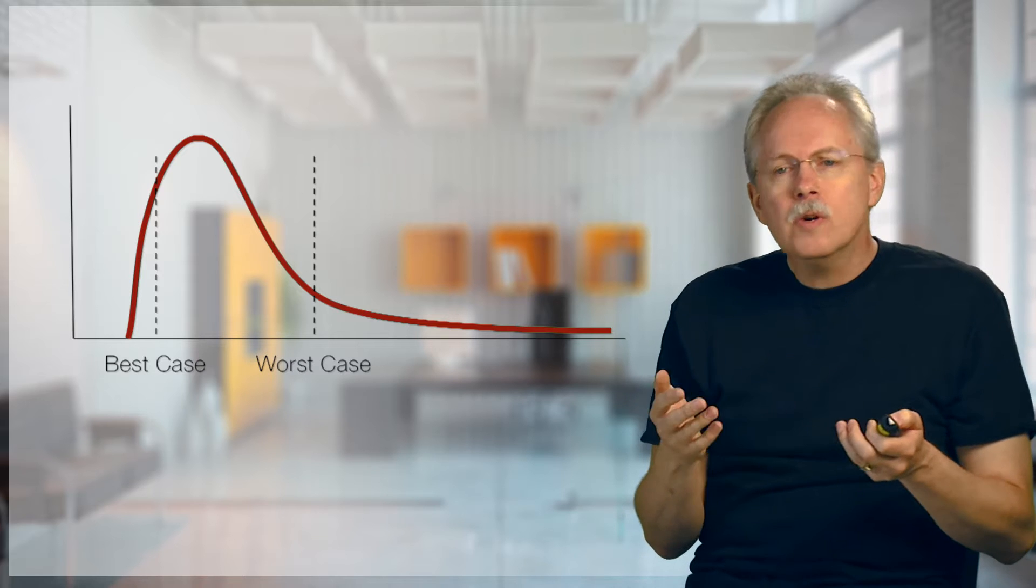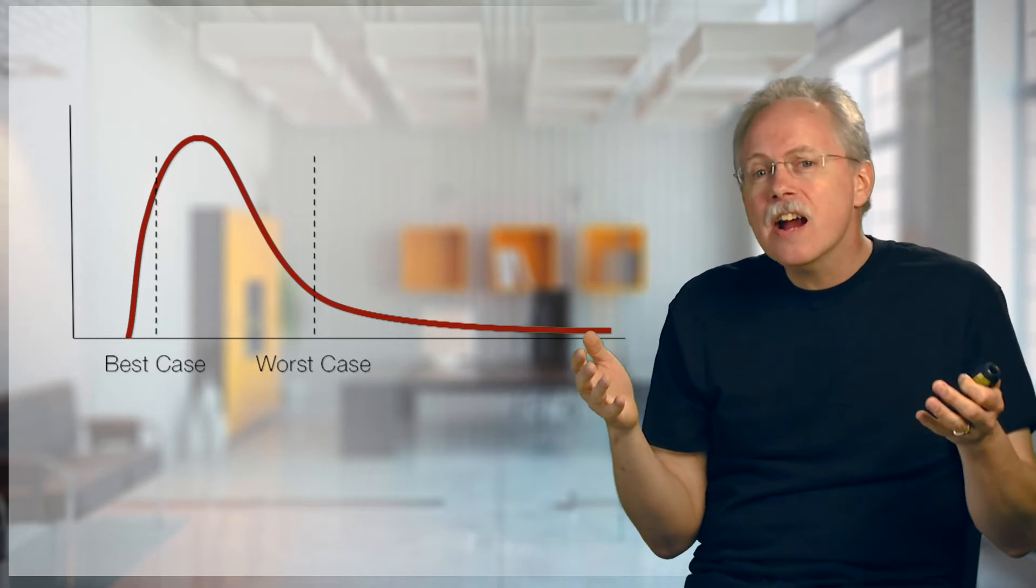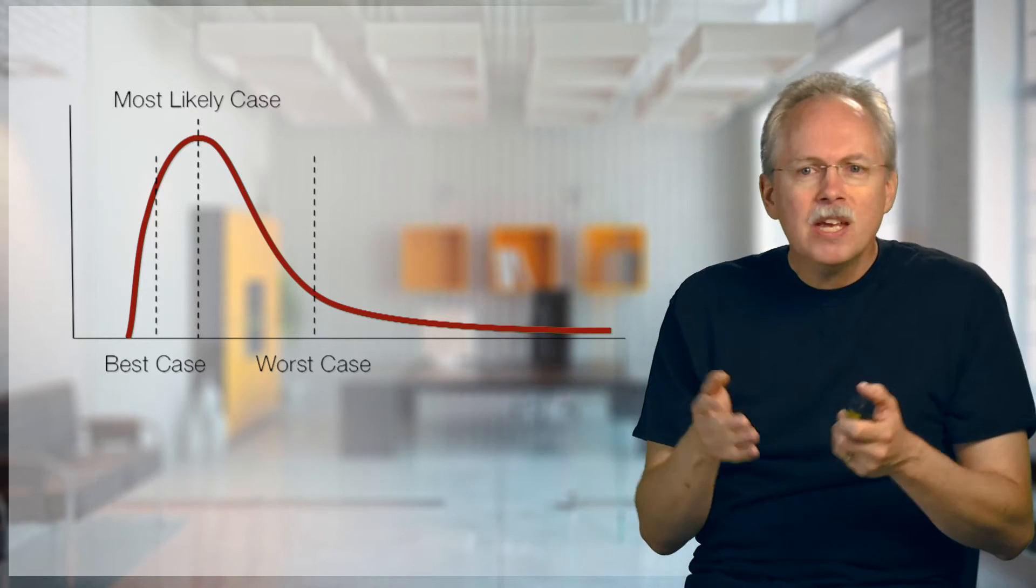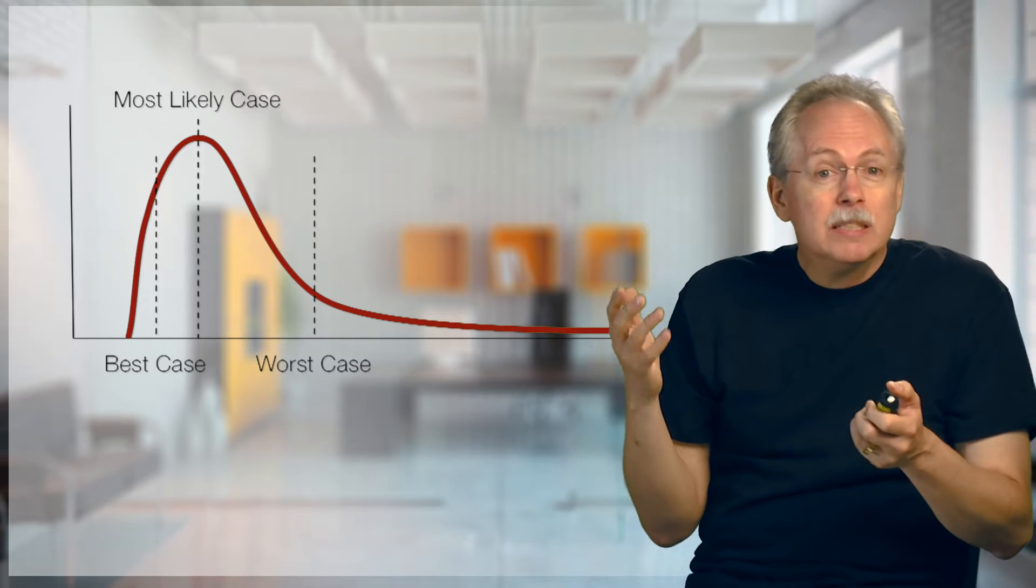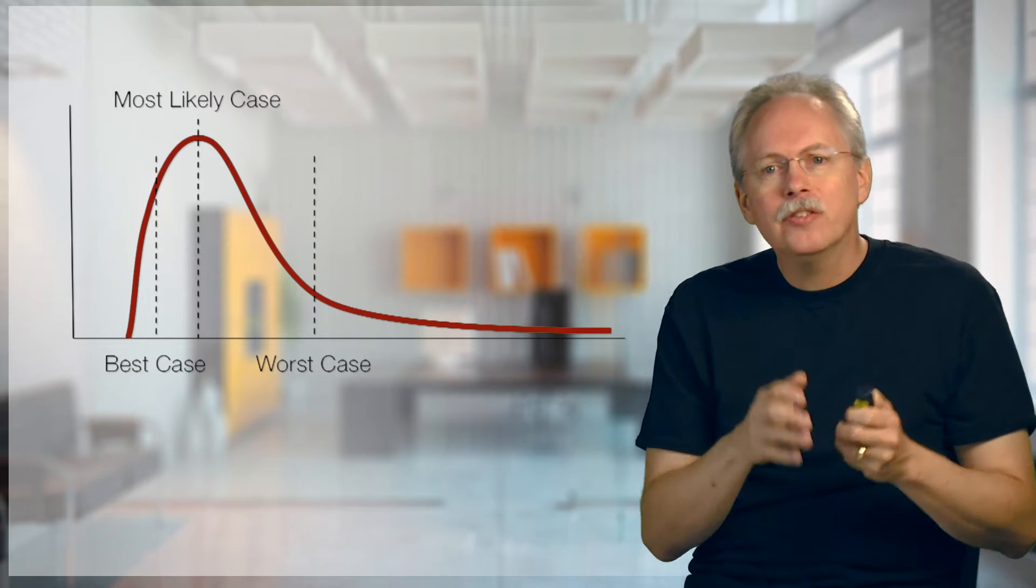There's the worst case. The worst case is much further along the curve here, and it represents an area of higher probability. And there's the most likely case, something in between, usually at the highest point in the curve, or the one they think most likely. That is an estimate.